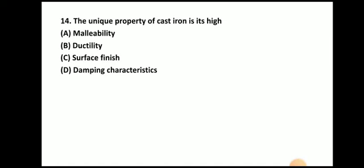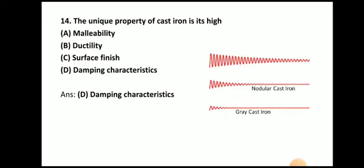Next question: The unique property of cast iron is its high damping characteristics. Cast iron is known for its damping characteristics — that is the unique characteristic of cast iron. It is not malleable, not ductile, and does not have a good surface finish, but it has good damping characteristics. You can see the damping characteristics of grey cast iron: the amplitude is decreasing faster in nodular cast iron and slowest in grey cast iron.